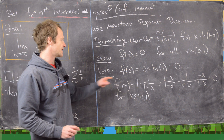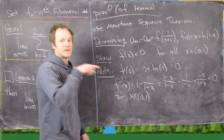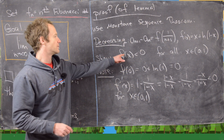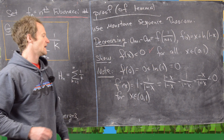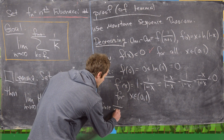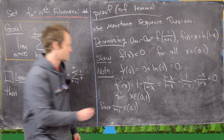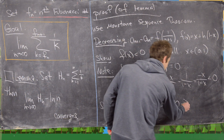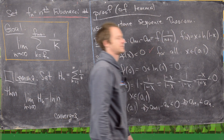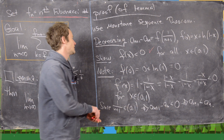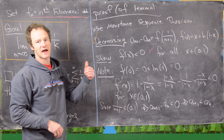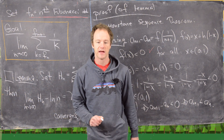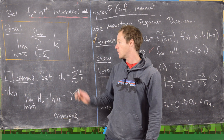So f is 0 at x equals 0 and then it's decreasing everywhere after that, making it negative for every x in (0, 1). Since 1 over (n+1) is in the open interval (0, 1), we have a_{n+1} minus a_n is less than 0, which means a_{n+1} is less than a_n — so our sequence is decreasing. By the monotone sequence theorem, it's bounded below and decreasing, so it must converge. It converges to a constant which we'll call gamma.